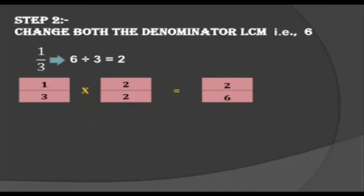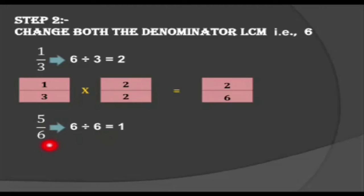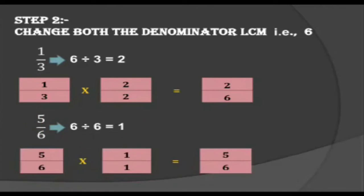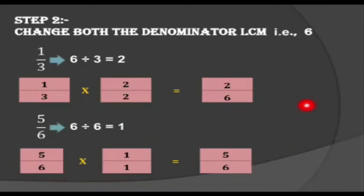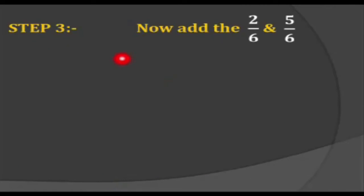For the next fraction, 5 by 6, the denominator is already 6 and the LCM is also 6, so we divide 6 by 6, which gives 1. We multiply 5 by 6 by 1 by 1, giving 5 by 6. Now we can see that the denominators are the same.